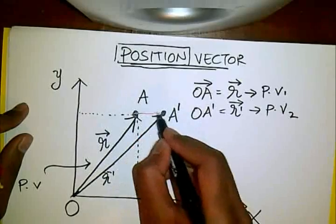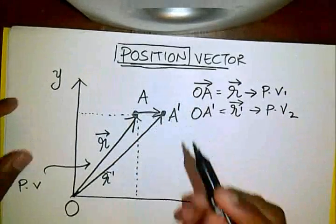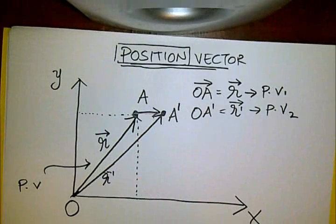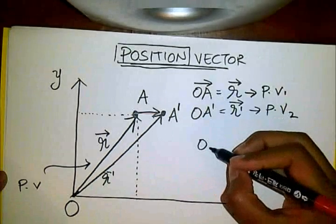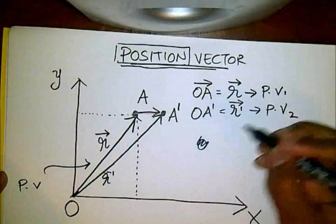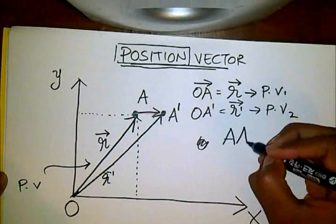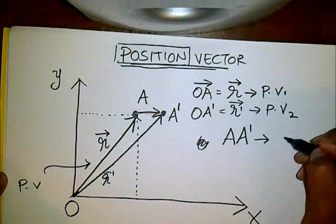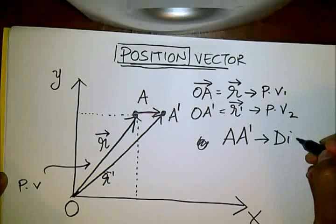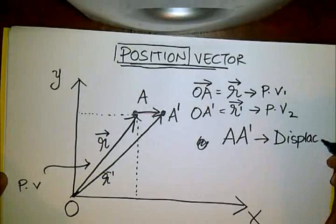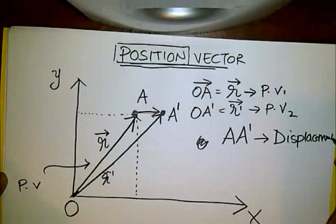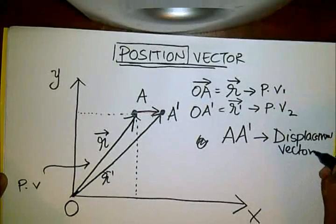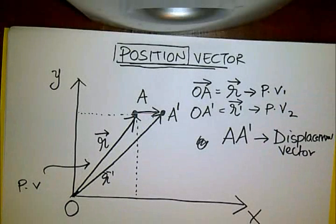It's so simple to see that AA dash is now our displacement vector.